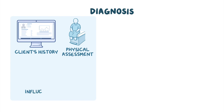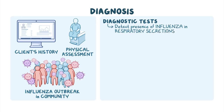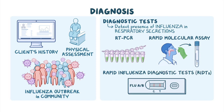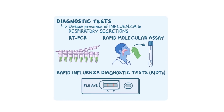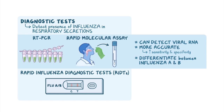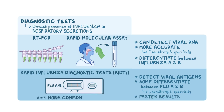Influenza is typically diagnosed based on the client's history, physical assessment, and knowing there's an influenza outbreak in the community around the time of symptom onset. There are three diagnostic tests available to detect the presence of influenza in a client's respiratory secretions: RT-PCR, rapid molecular assay, and rapid influenza diagnostic tests, or RIDTs. RT-PCR and rapid molecular assays can detect viral RNA and are more accurate since they have high sensitivity and specificity and can differentiate between influenza A and B. RIDTs detect viral antigens, and some RIDTs are able to differentiate between type A and B. These rapid tests have lower sensitivity and specificity, but they provide faster results within minutes, so they are more commonly used to diagnose influenza.